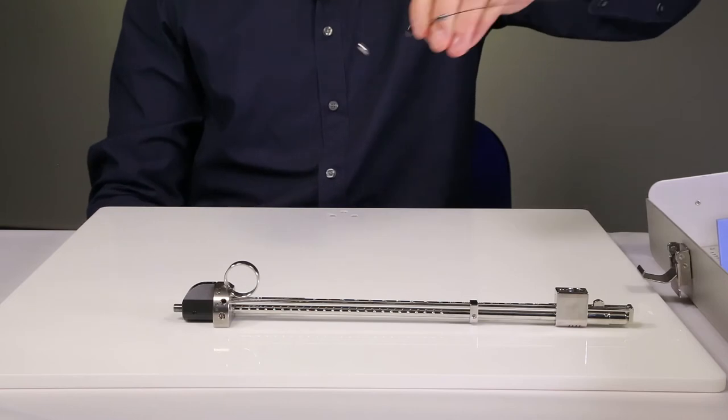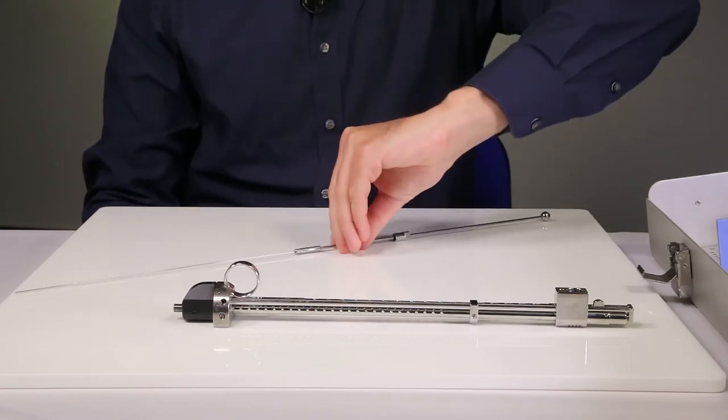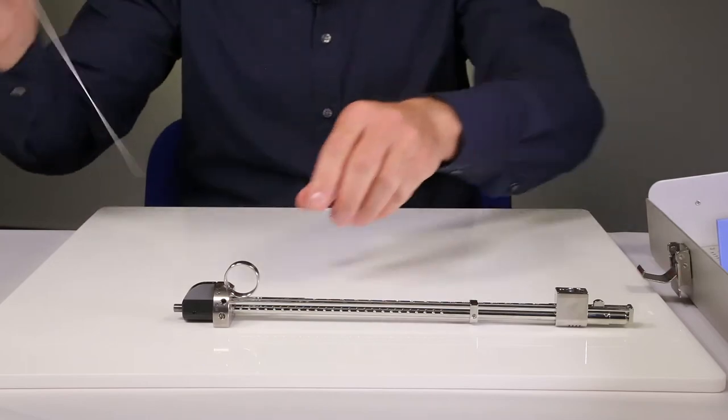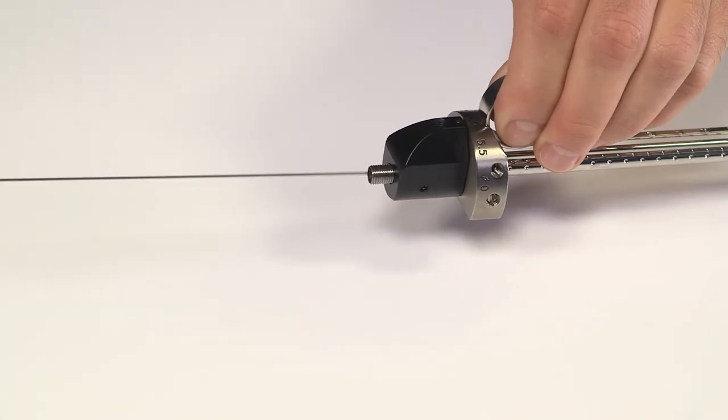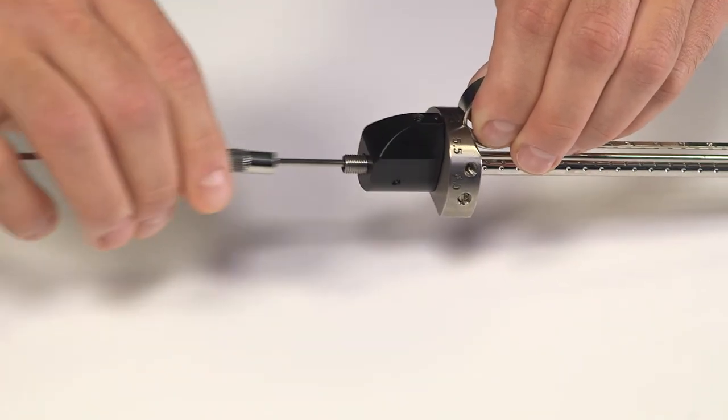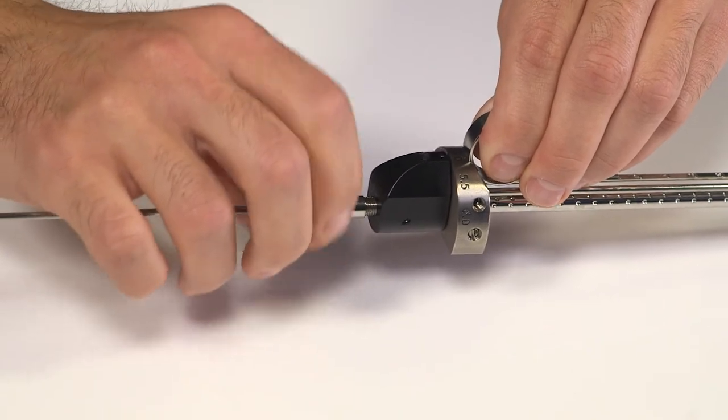In order to assemble the applicator, carefully insert the push wire rod into the main barrel and turn the cap clockwise until it's tight.